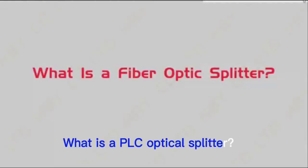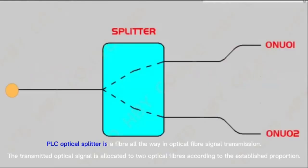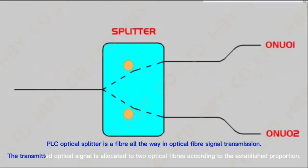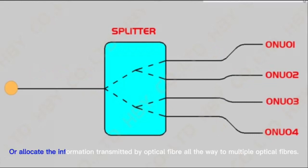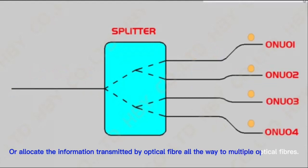What is a PLC optical splitter? A PLC optical splitter is a fiber device used in optical fiber signal transmission. The transmitted optical signal is allocated to two optical fibers according to the established proportion, or it can allocate the information transmitted by one optical fiber to multiple optical fibers.